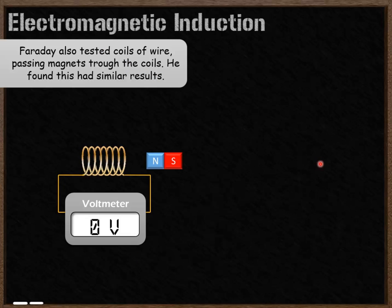Faraday also tested passing magnets through coils of wire and found that had a similar effect. Watch what happens to the amount of voltage as I pass the magnet through the coil of wire.